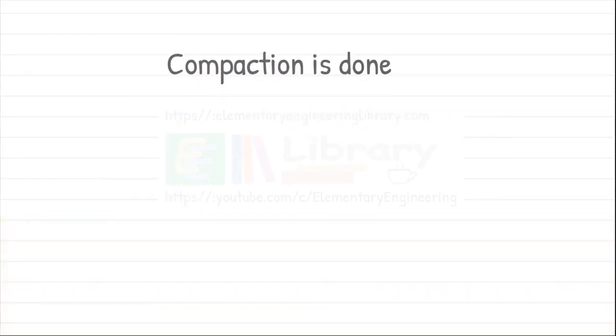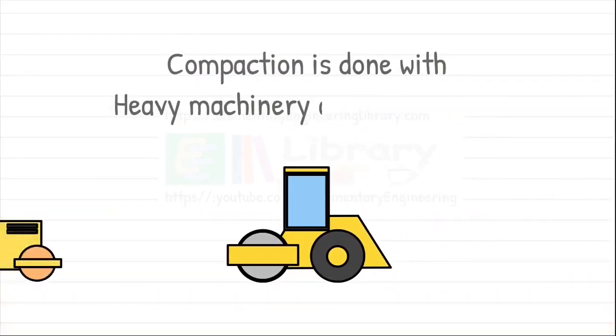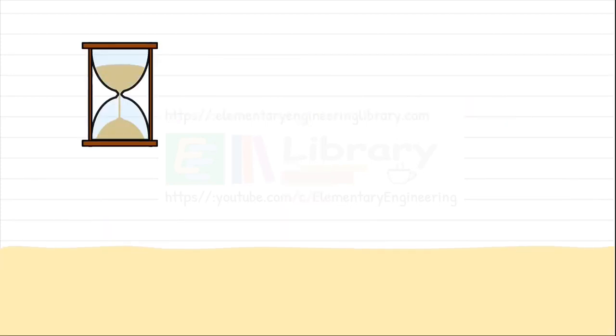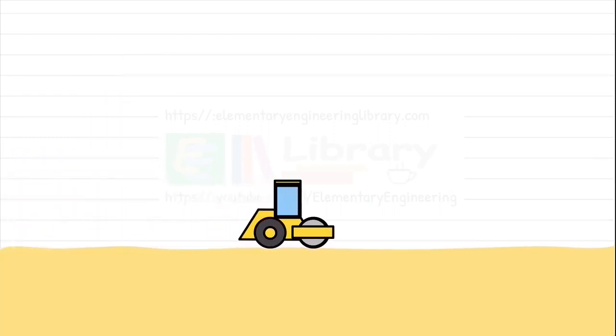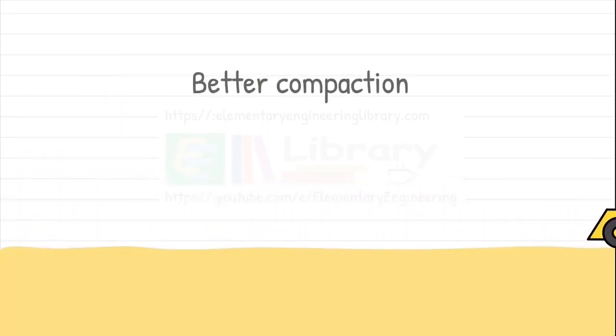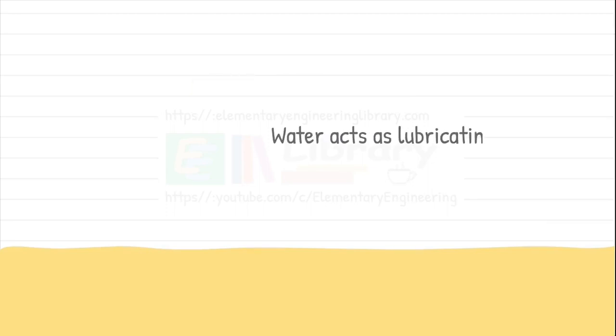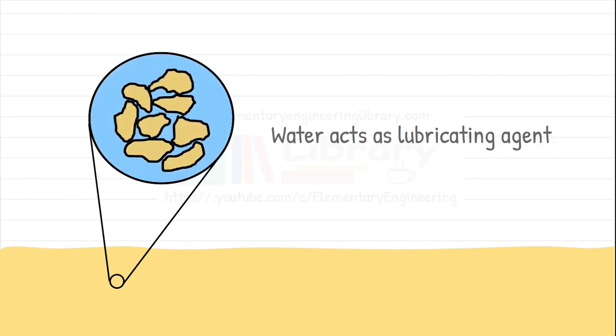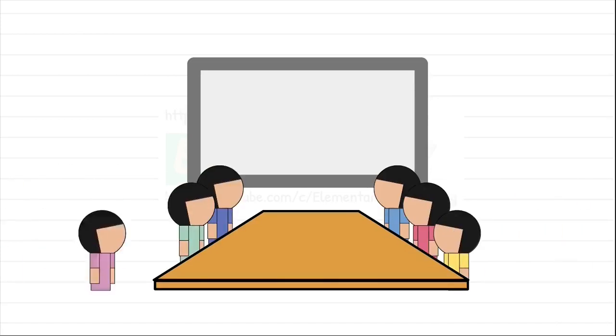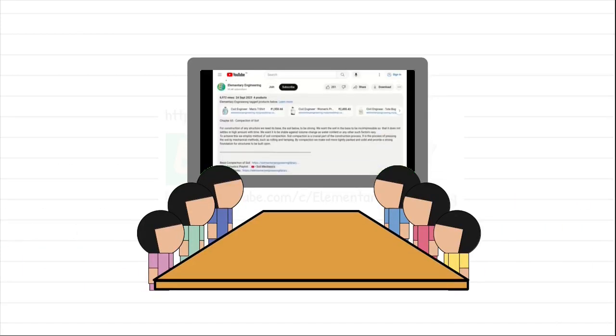Compaction is usually done with heavy machinery and equipment. With time we have learned that if we add little water to the soil and then try compacting it, it gets better compacted because water acts as a lubricating agent. When the load is applied to the soil, it helps soil particles move more easily and helps soil achieve denser configuration. We have discussed compaction in detail in our previous video. We can find the link in the description.